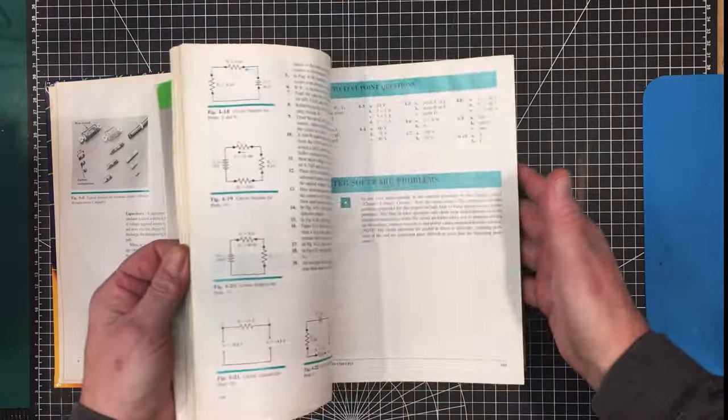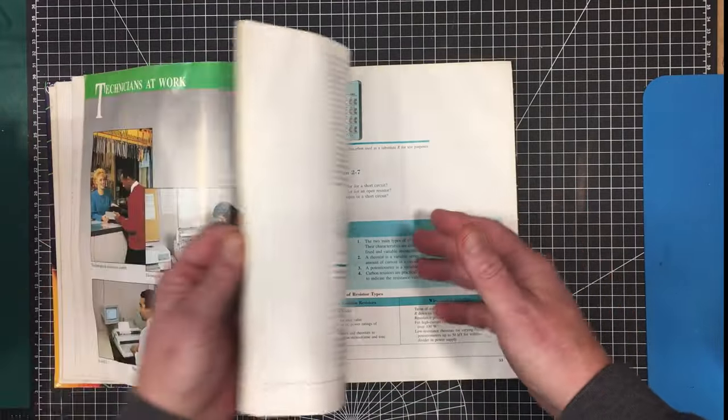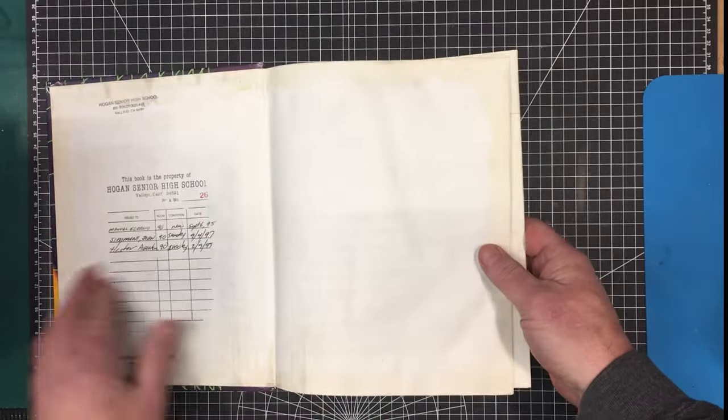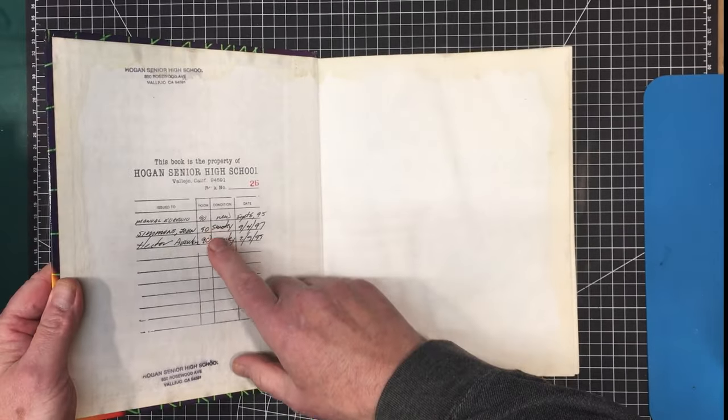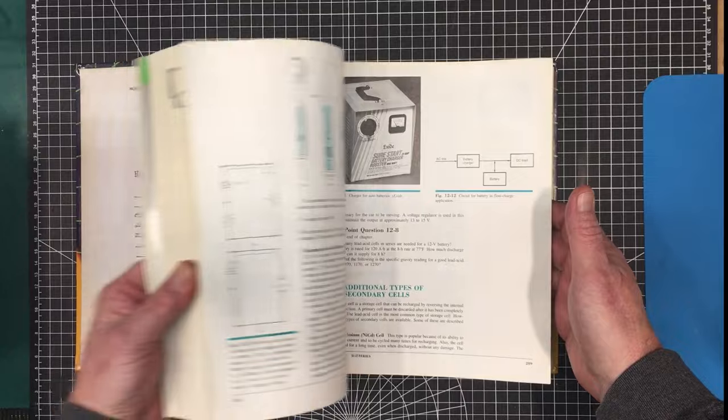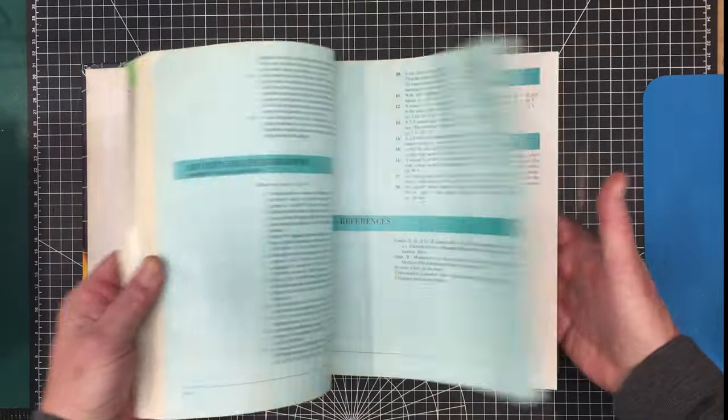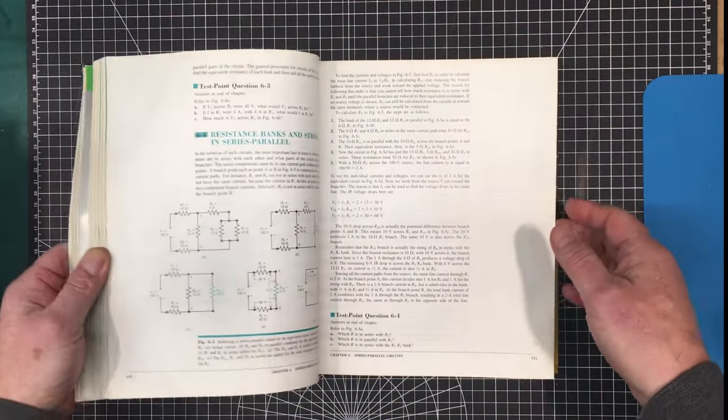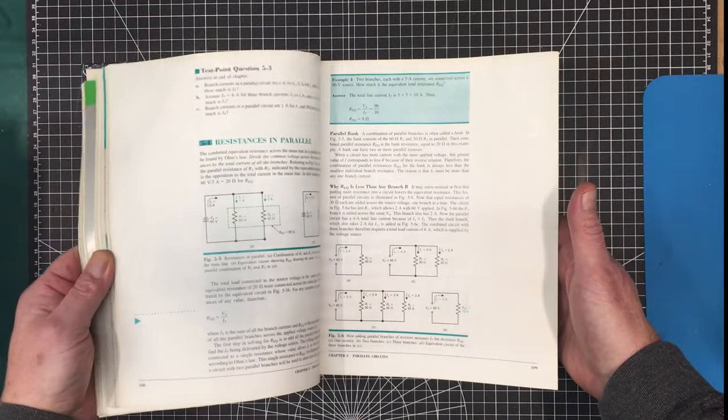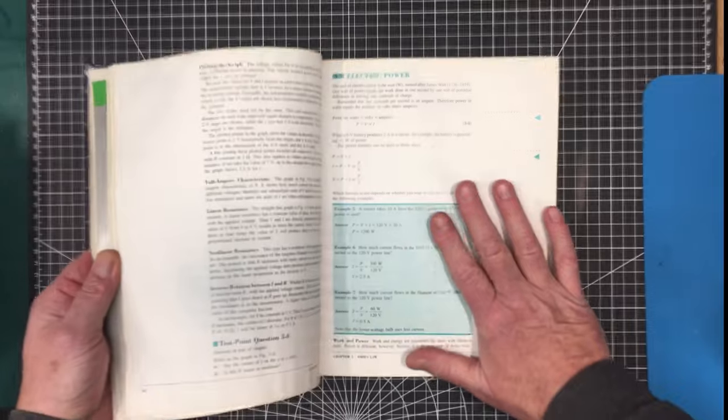This is obviously a two-year course because you can see the students that signed it out signed it out for two years at a time. This doesn't get into transistors or anything like that, but it goes through and tells you how to use the basic instruments, how to measure stuff, what will happen if you have a network of resistors and capacitors, and how to determine what the results are. It gives you all the really basic knowledge.